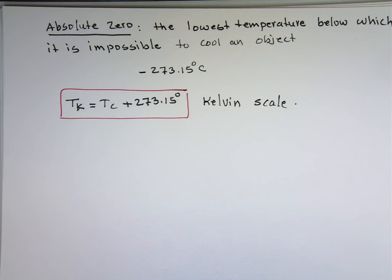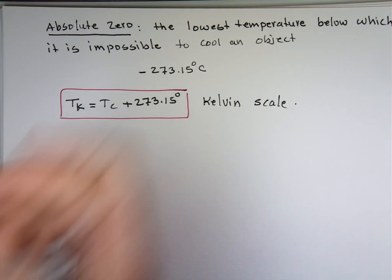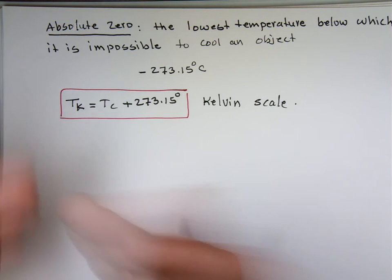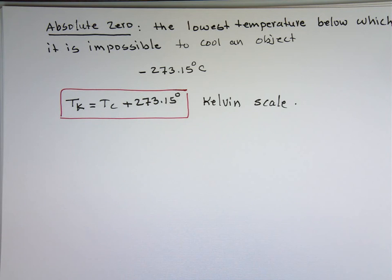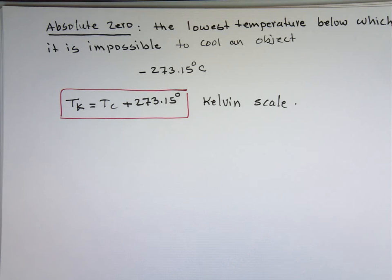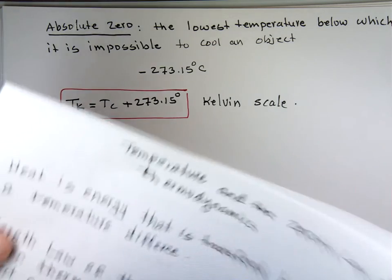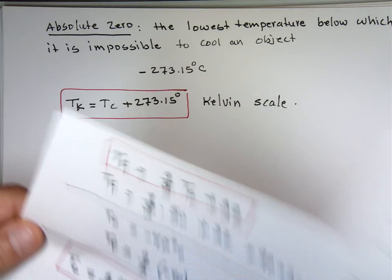So we have three ways to measure temperature: Celsius, Fahrenheit, and Kelvin. We also covered absolute zero — the lowest temperature any substance or object can reach; you can never cool it below that. That wraps up the first topic covering temperature, heat, the zeroth law of thermodynamics, and the Kelvin scale.